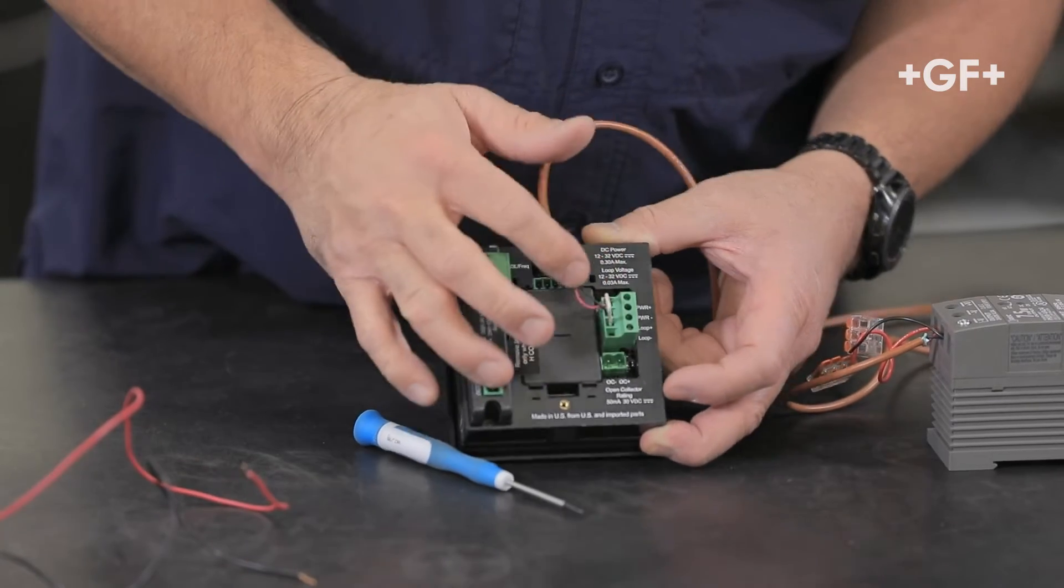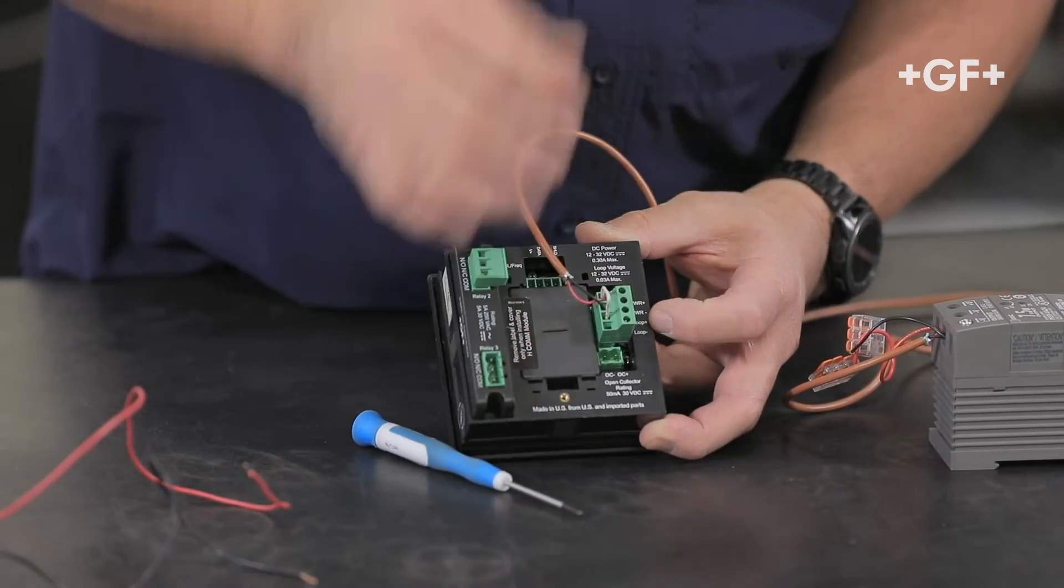Let's go ahead and install the jumper. All right, there's my jumper. I've got 24 volts coming in and I have it jumped over to loop plus to power our loop.